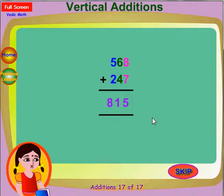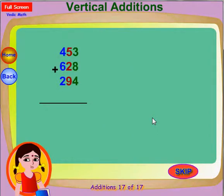This is a simple example of dot method. Now let's use this method to add 3 long numbers: 453 plus 628 plus 294. Let's add all the numbers in the ones place.